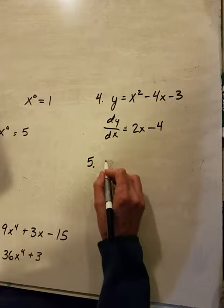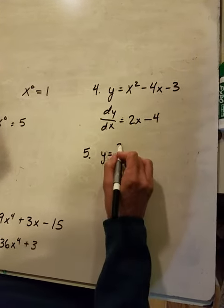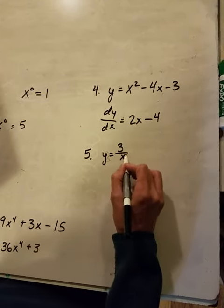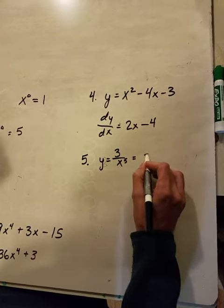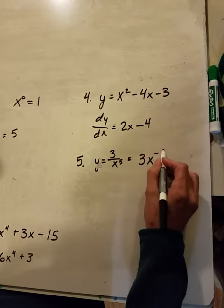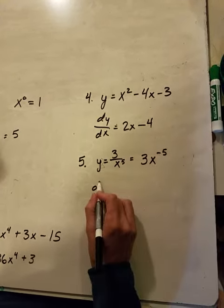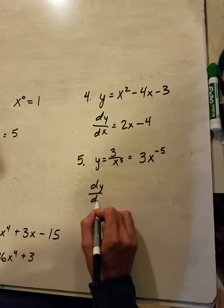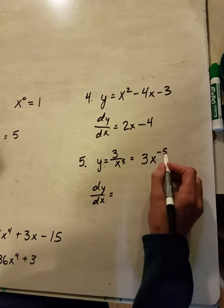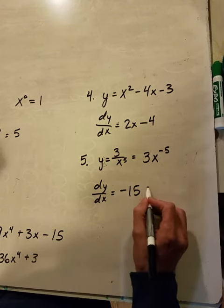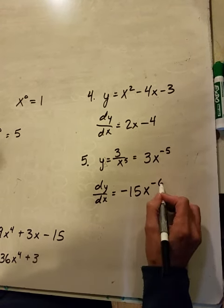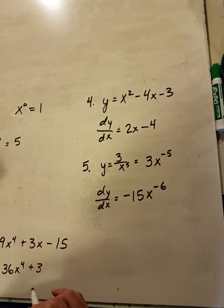And then this last one looks really awful until you write it a different way. This is the same thing as 3x to the minus 5th. So dy dx is equal to negative 15, and we're going to reduce the power by 1, so x to the minus 6th.